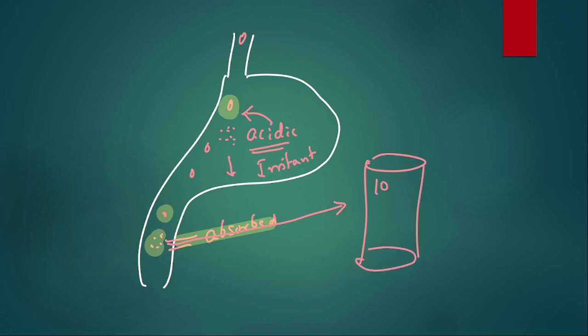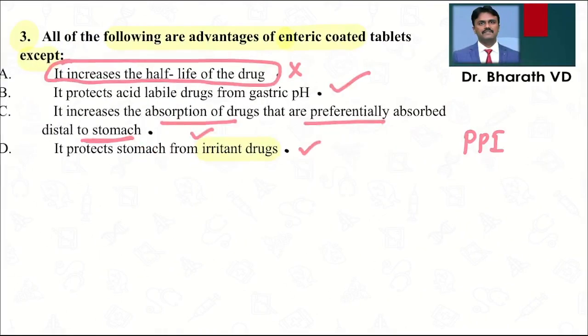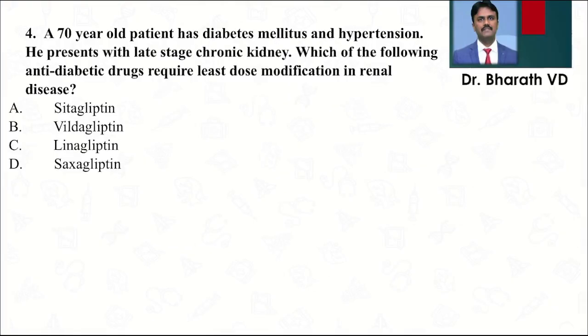Half-life comes into play after absorption when the drug enters systemic circulation — for example, if 100 units drops to 50 in one hour, the half-life is one hour. Enteric coating only affects absorption, not half-life. To summarize: enteric coating prevents acid destruction, decreases gastric irritation, and helps the drug get absorbed more in the intestine.